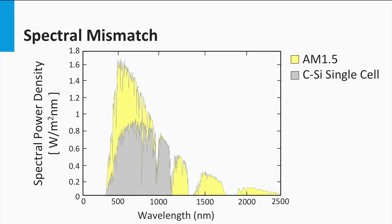Here we see the spectral power density function again. Let's consider the typical optical loss mechanism for a semiconductor with a band gap E-gap. We take crystalline silicon as an example, and we assume an EQE of 100% above the band gap for the solar cell.